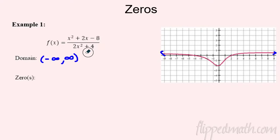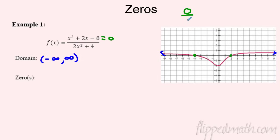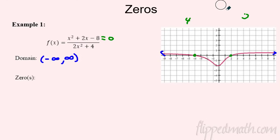Now we're going to find the zeros. I can see them on the graph — they're the x-intercepts. What causes that? It's when the top is zero. If the numerator is zero, zero divided by anything is zero. So if the numerator is zero, the whole fraction is zero. Let's figure out when the top equals zero.